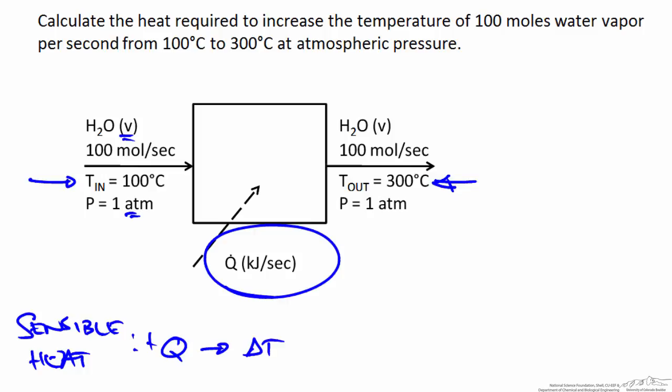If we want to calculate the magnitude of the sensible heat in this case we can start with the appropriate form of the energy balance. For an open system the energy balance reduces to Q is equal to delta H. This assumes that there is no work done by or on the system and also neglects any change in potential or kinetic energy. The enthalpy leaving and entering the system is extensive, in other words it is proportional to the amount of material that we are moving through the system.